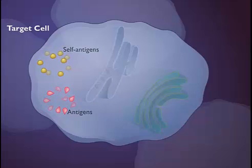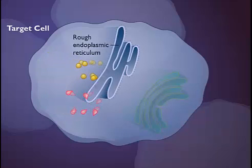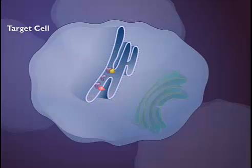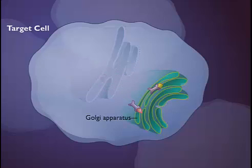The antigens are then transported into the rough endoplasmic reticulum. The antigens combine with class 1 MHC molecules. The combination is then transported to the Golgi apparatus and from there to the plasma membrane.